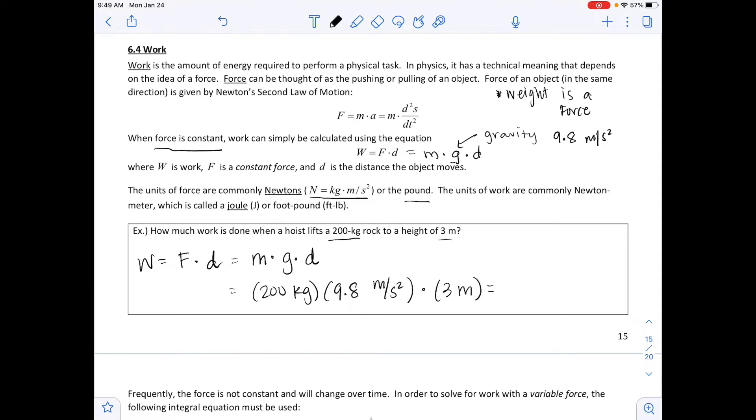Multiplying those first two numbers together, we get 1,960, and those units would be kilograms times meters over seconds squared. And then we multiply by 3 meters. But I want to look at this, which is going to be defined as a newton. And then multiplying 1,960 times 3, we get 5,880, and these are newton-meters or joules.